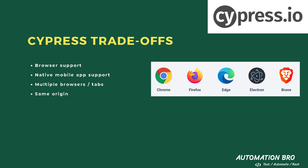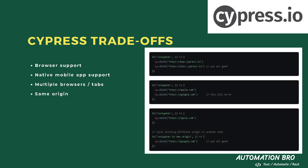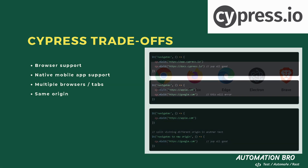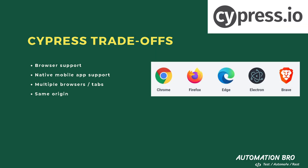The last trade-off is same origin. If you're not familiar with same origin, think of it this way: if you're working on cypress.io you should just be hitting cypress.io — you cannot hit automationbro.com as that would be a different origin. You can visit two domains of different origin in different tests, but you cannot visit two domains of different origin within the same test. So in one test you can go to cypress.io, but you'd need a separate test to visit automationbro.com. This might be inconvenient for specific use cases, but in my opinion it's not really a big downside.